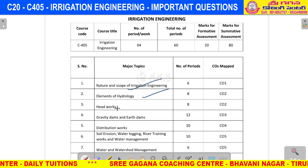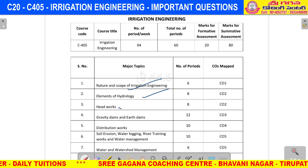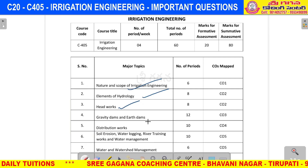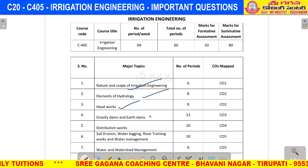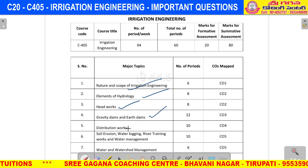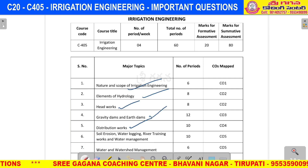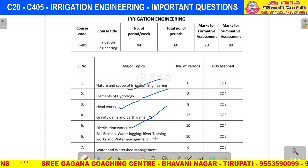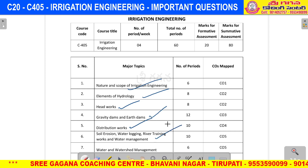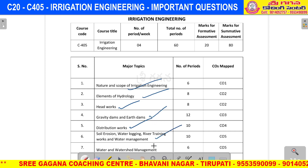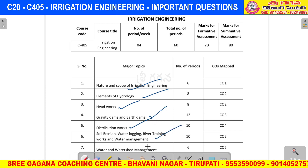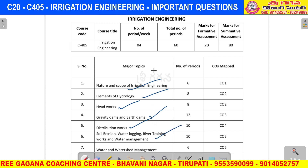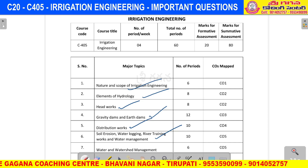elements of hydrology, headworks, gravity dams and earth dams, distribution works, soil erosion, water logging, river training works and water management, and watershed management. So, there are 7 units total.